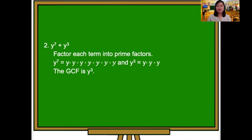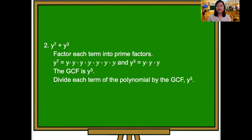The greatest common factor is y cubed. We divide each term of the polynomial by the greatest common factor y cubed to get the other factor. y raised to 7 divided by y cubed is y raised to 4. y cubed divided by y cubed is 1. Therefore, y raised to 7 plus y cubed is equal to y cubed times the quantity y raised to 4 plus 1.